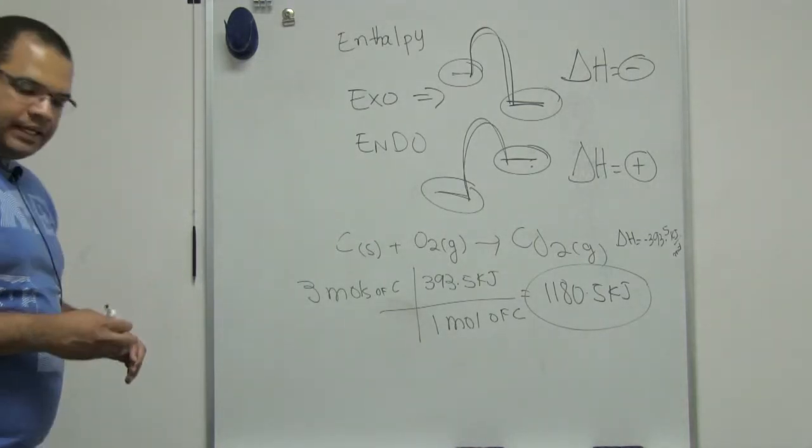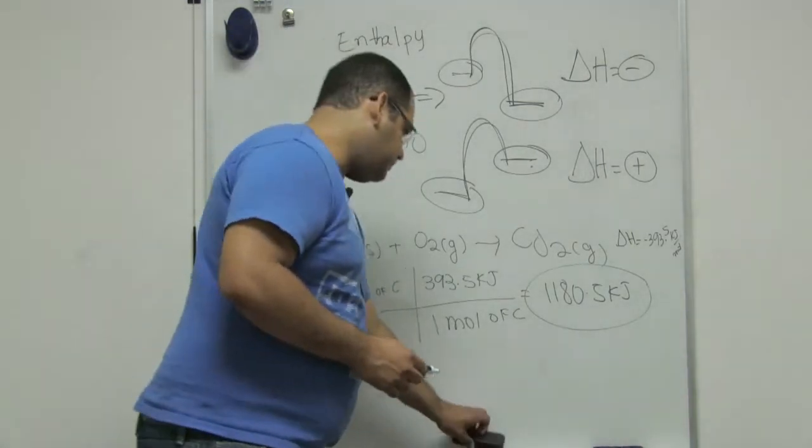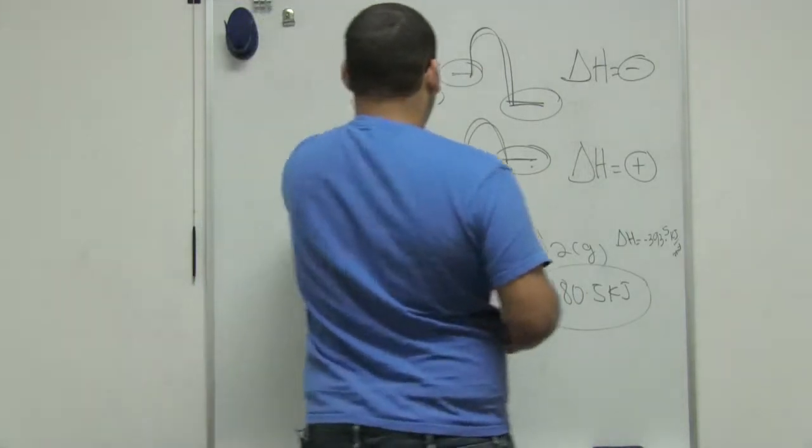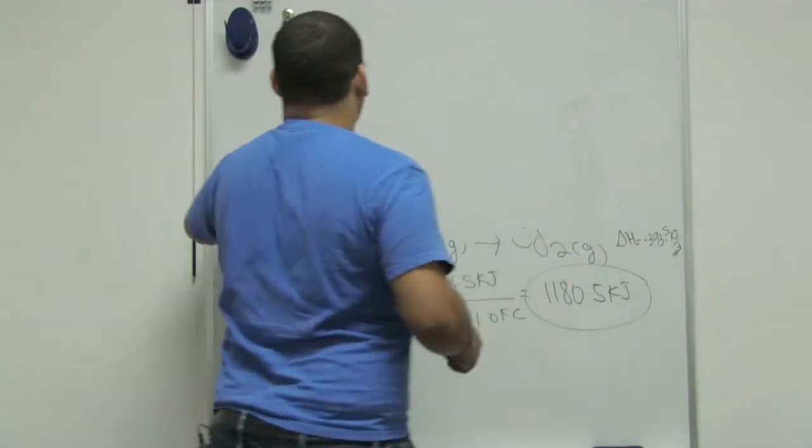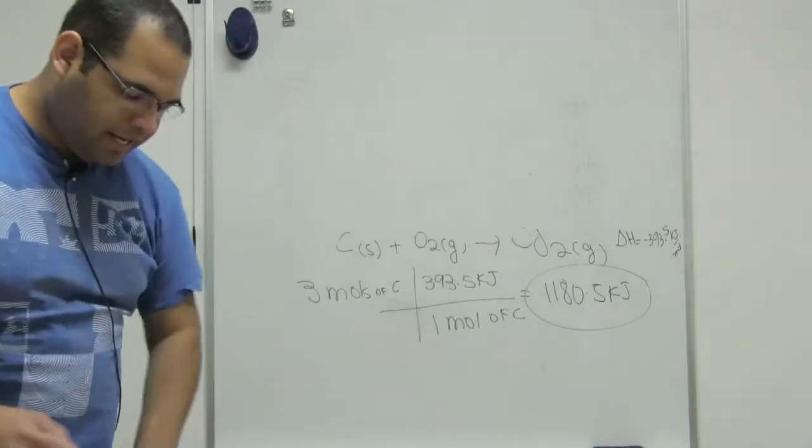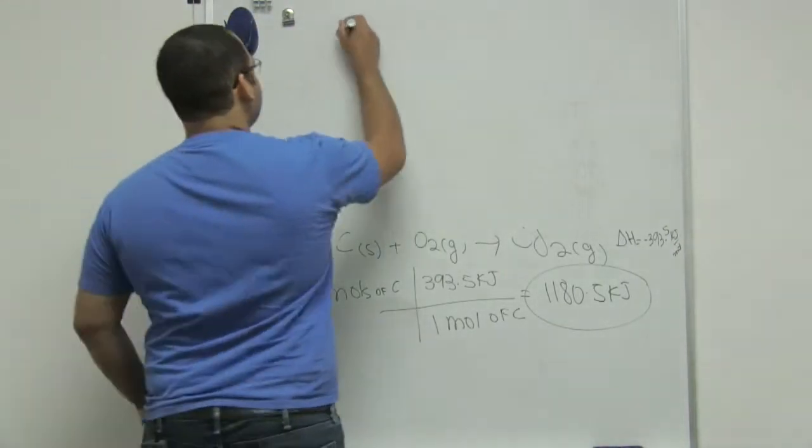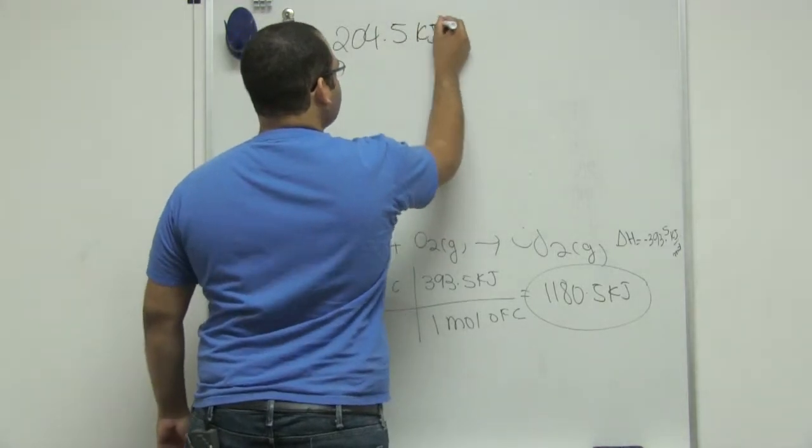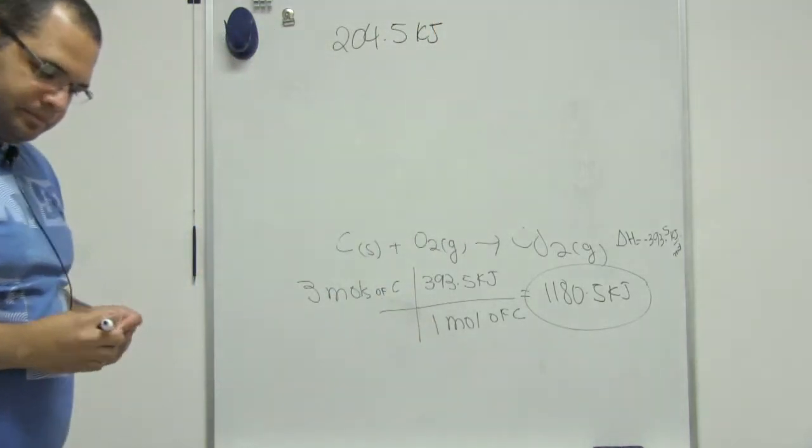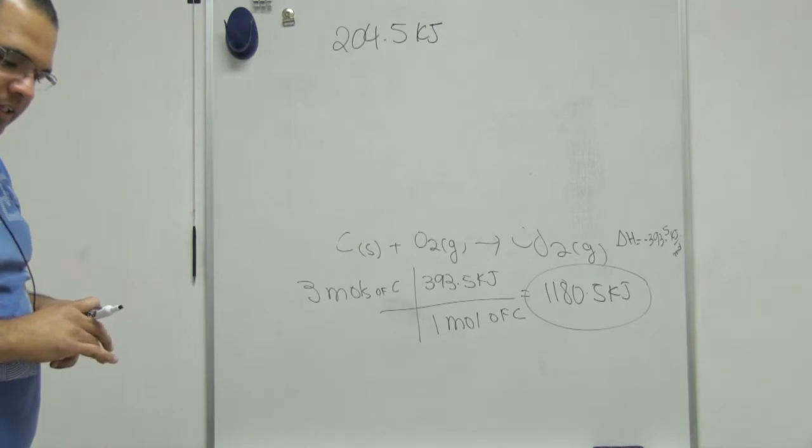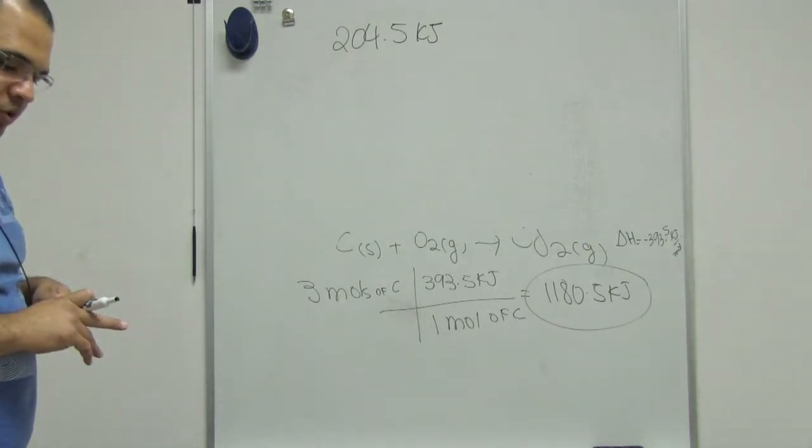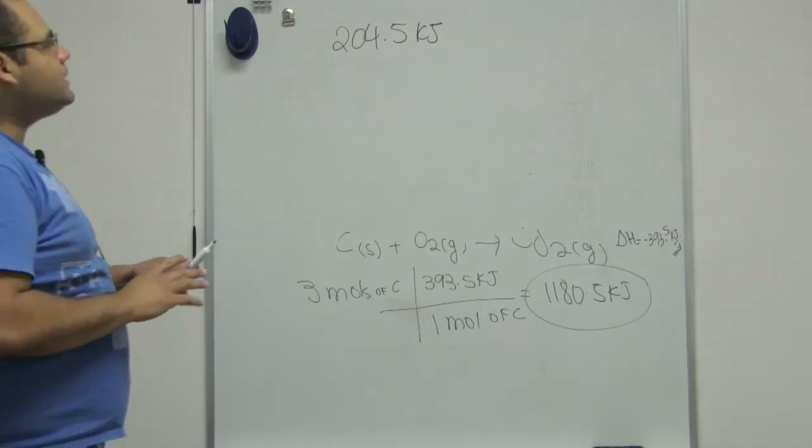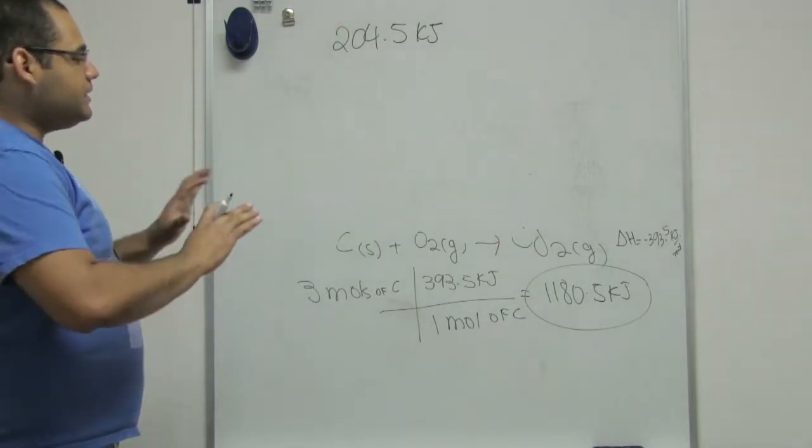The next question says, if I have 204.5 kilojoules of heat released, how many grams of CO2 were produced? This is a little bit more complicated, but it's not bad.